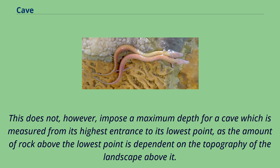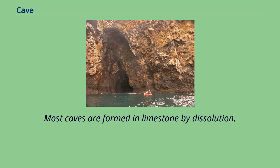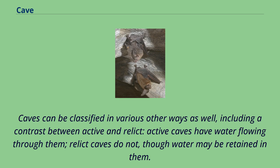This does not, however, impose a maximum depth for a cave which is measured from its highest entrance to its lowest point, as the amount of rock above the lowest point is dependent on the topography of the landscape above it. For karst caves, the maximum depth is determined on the basis of the lower limit of karst-forming processes, coinciding with the base of the soluble carbonate rocks. Most caves are formed in limestone by dissolution. Caves can be classified in various other ways as well, including a contrast between active and relict.